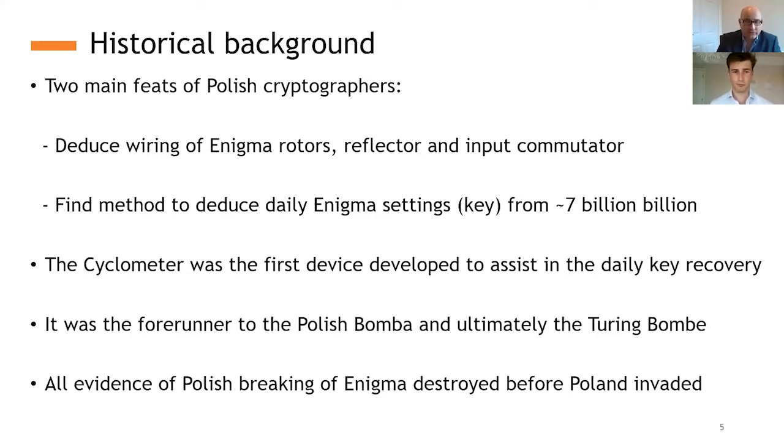So as a final point before I hand over to Hal, when it became clear that Poland was going to be invaded by Germany, all evidence of the Polish breaking of the Enigma had to be destroyed. Because if the Germans had got any sense that they were breaking into the Enigma, then they would have completely started again with a different encryption process. And so all the cyclometers, the replica Enigmas, the bombers, the other decryption aids that had been developed, they were all destroyed. And that meant that up until very recently, the world was a world free of cyclometers. But I'm going to hand over to Hal now, and he'll tell you how he managed to help change that.